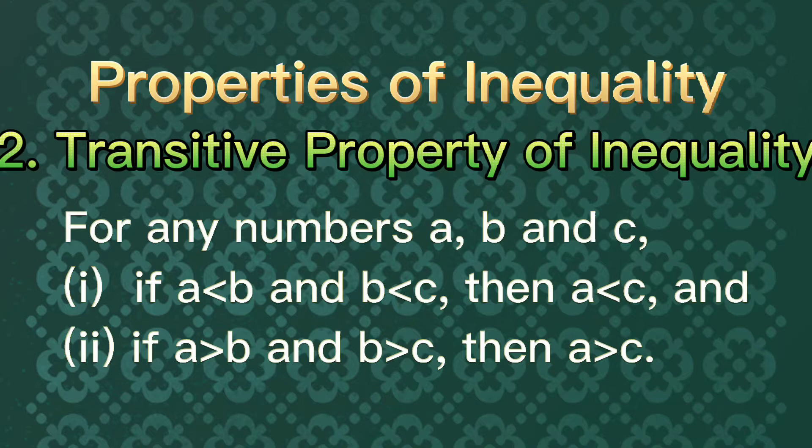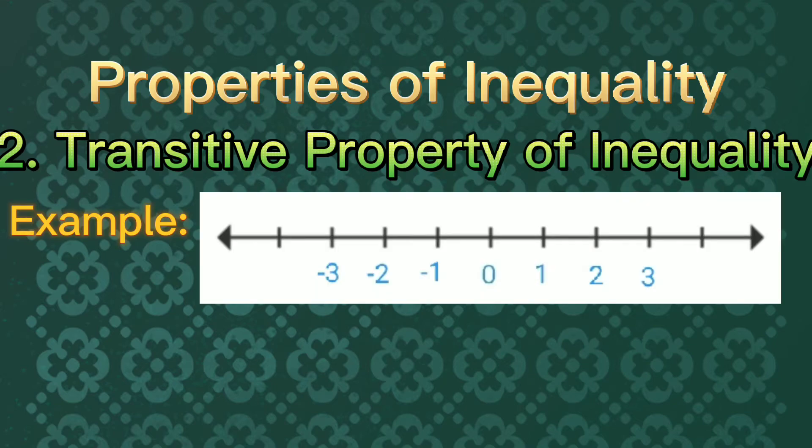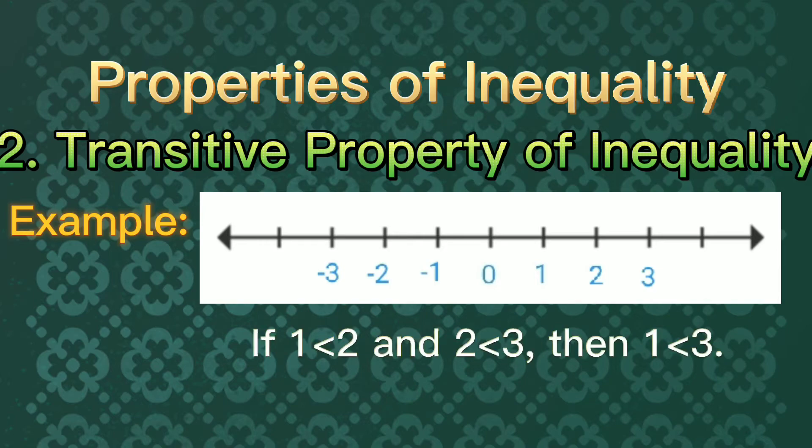Let's take numbers 1, 2, and 3 on the number line. If 1 is less than 2 and 2 is less than 3, then we could say that 1 is less than 3.